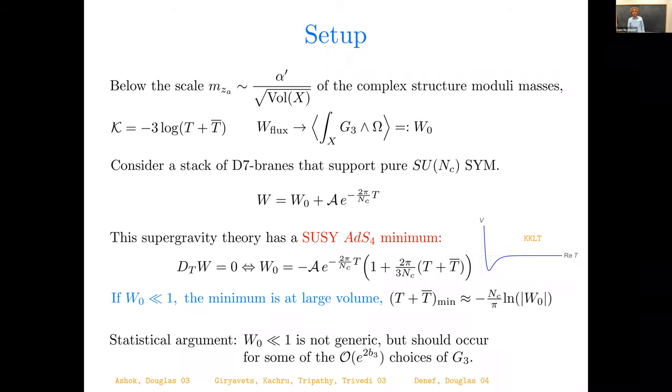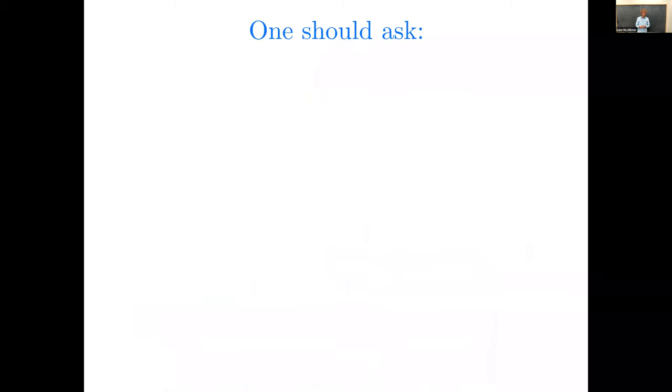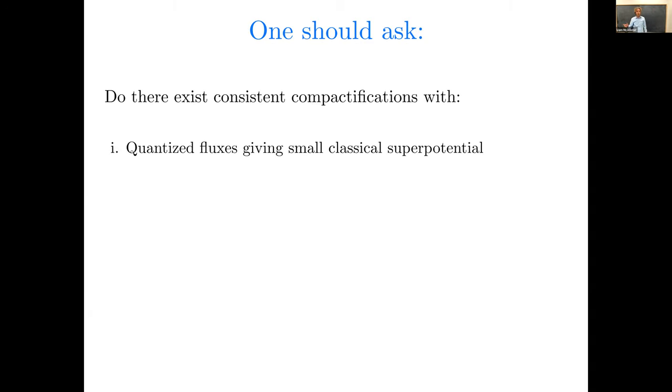Now if we consider a stack of seven branes that support super Yang-Mills, pure super Yang-Mills, then the total superpotential is the sum of the Gukov-Vafa-Witten term, which is a constant, and an exponential term from gaugino condensation in the infrared of the super Yang-Mills theory. And this supergravity theory with the Kähler potential and superpotential shown does have a supersymmetric ADS-4 minimum. You can easily calculate where it lies, and what you see is that the position of the minimum is at large volume, t plus t bar large, only if w0 is very small in magnitude. So t plus t bar at the minimum is approximately log of magnitude of w0, the minus sign.